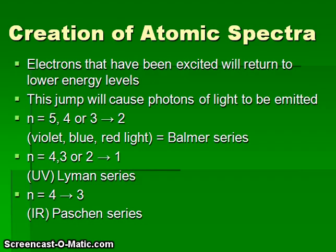Let's imagine an atom of hydrogen. Within the nucleus there would be a single proton, and the atom would also have one electron located in the first energy level. If we add energy to that electron — by heating the atom or by running electric current through a collection of hydrogen atoms — that energy can actually boost electrons to higher energy levels: perhaps the second, third, fourth, or fifth energy level.